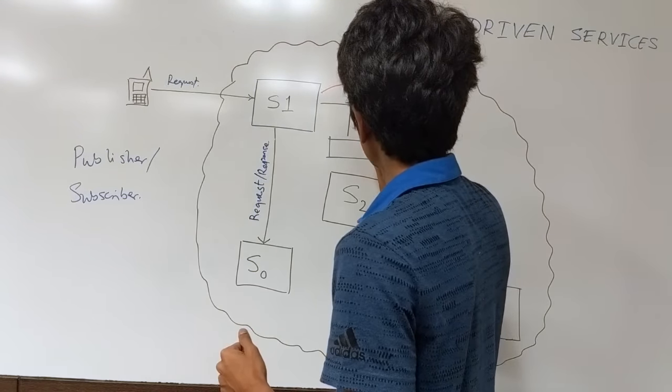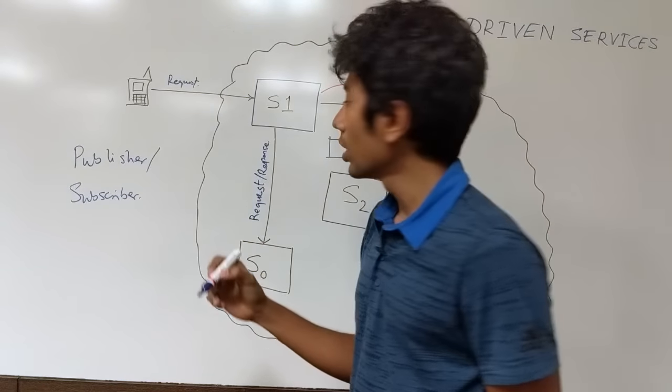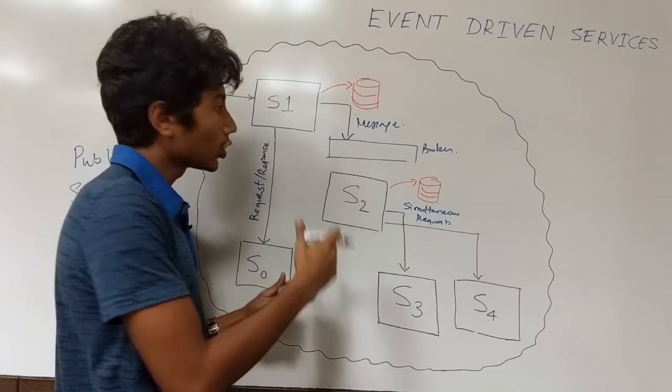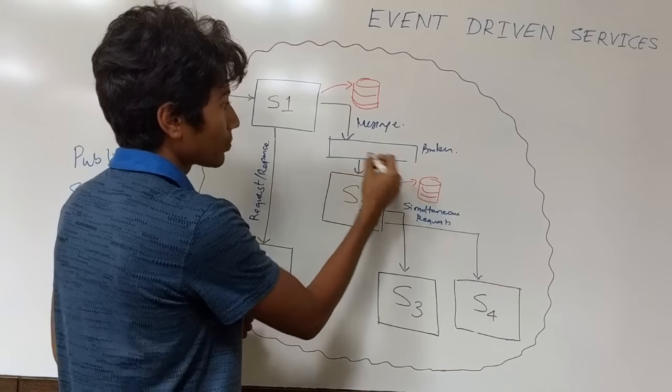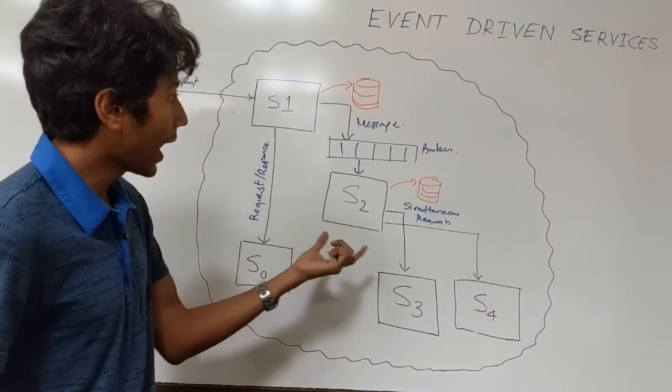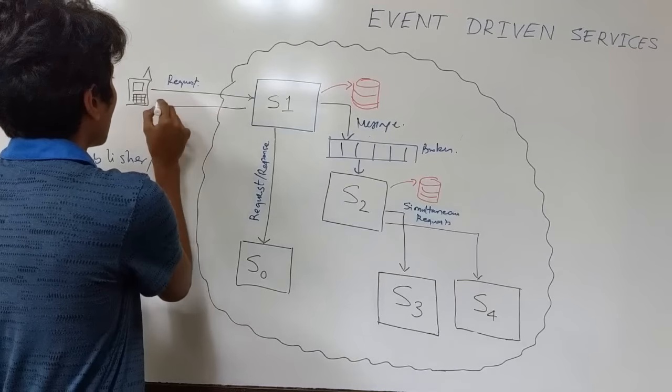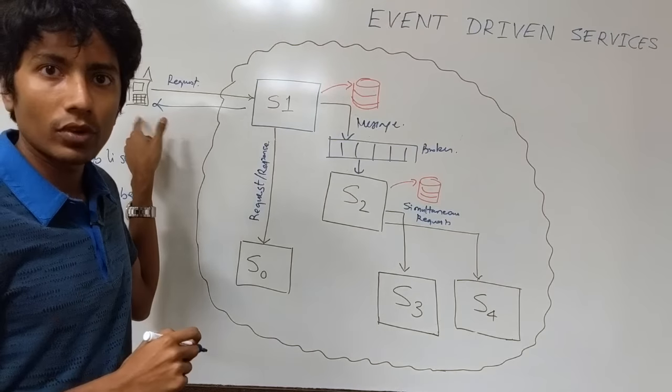So if I send a message here to a message broker like Kafka, like RabbitMQ and depend on it to correctly send the message to S2. It's probably going to persist some messages and abstract out a lot of things. Now S1 can actually send a success to the client.